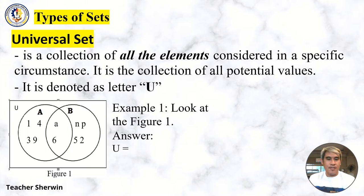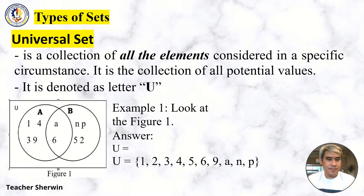Example 1: Look at Figure 1. Answer: The Universal Set is {1, 2, 3, 4, 5, 6, 9, A, N, P}. So that's the Universal Set, meaning all the elements.